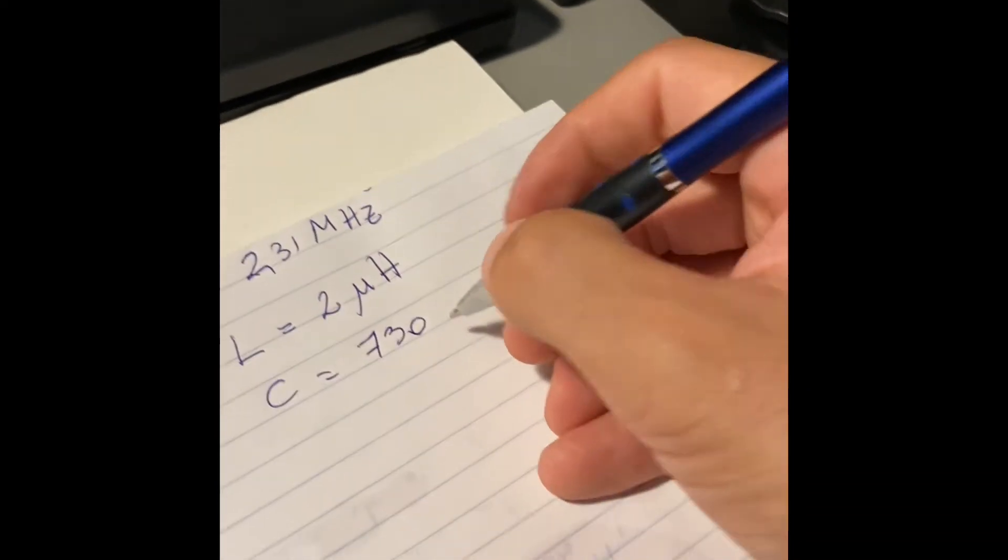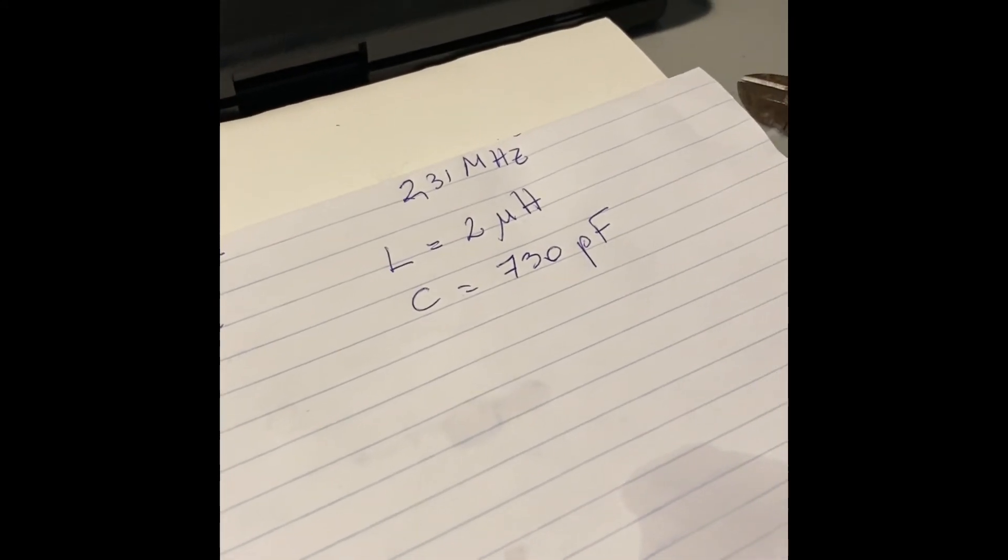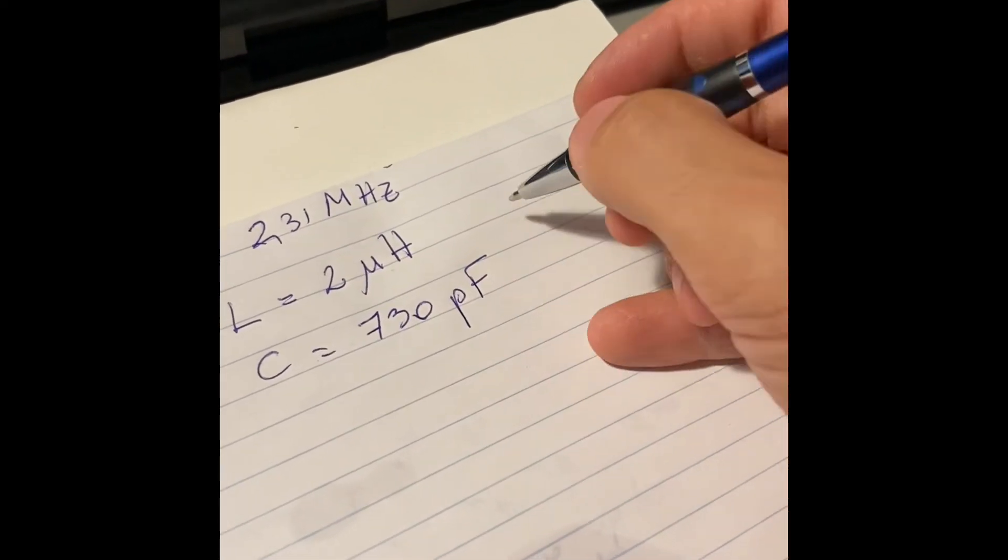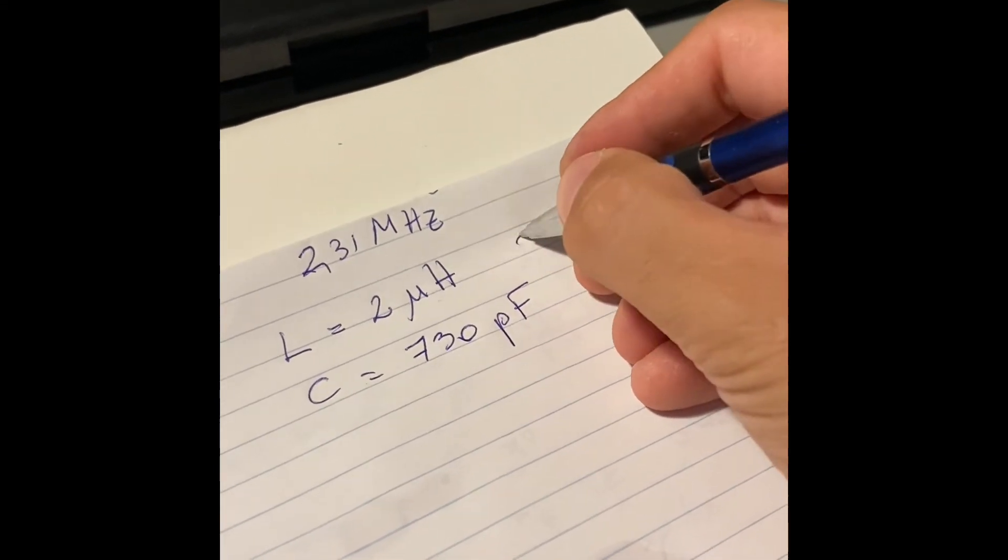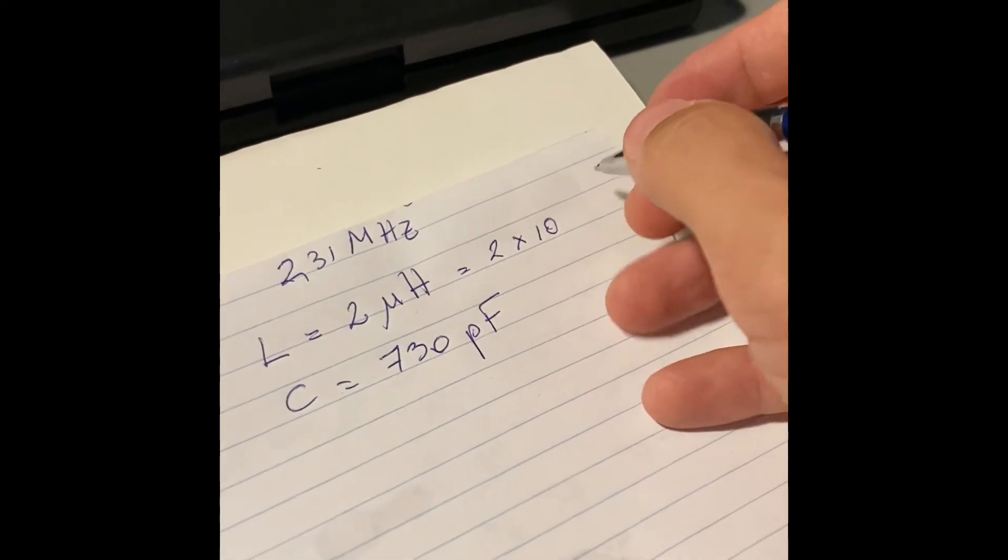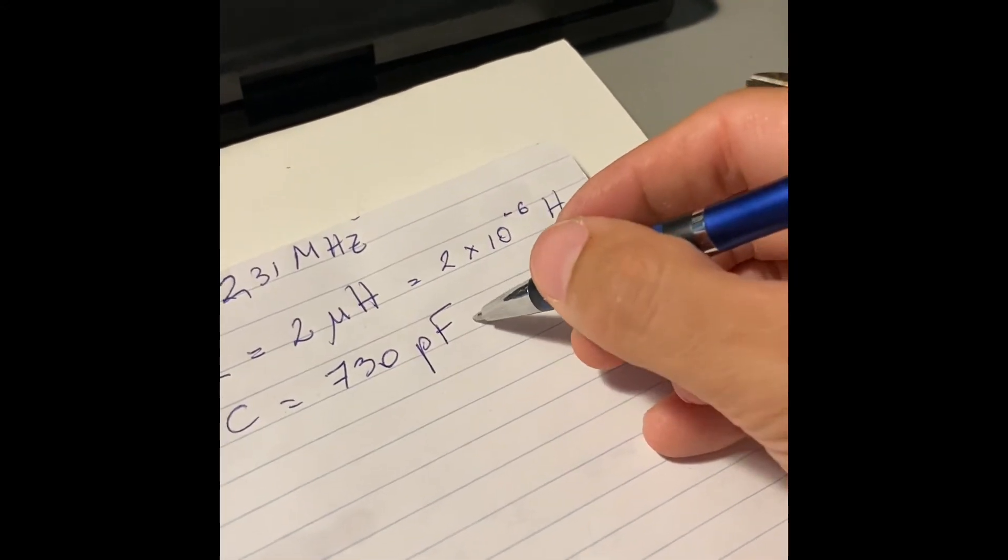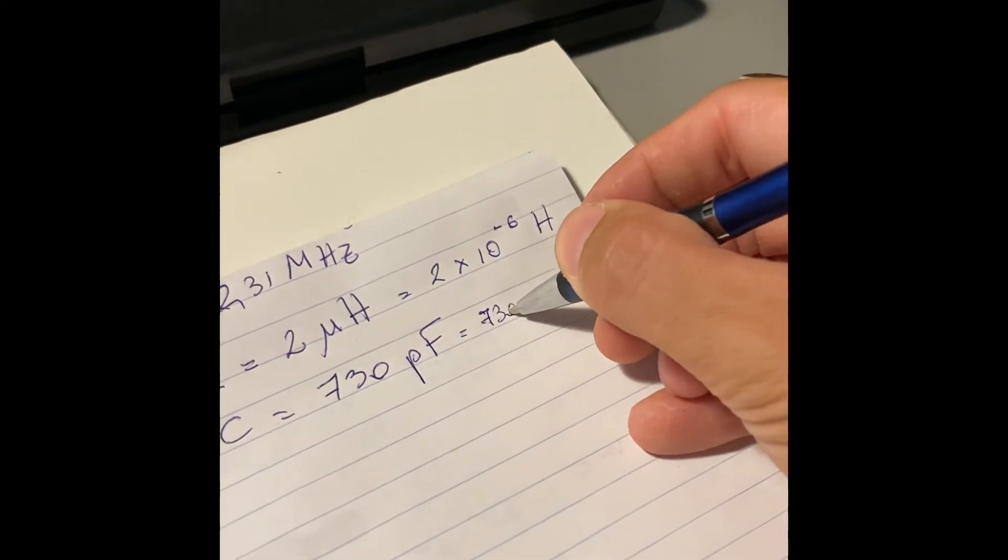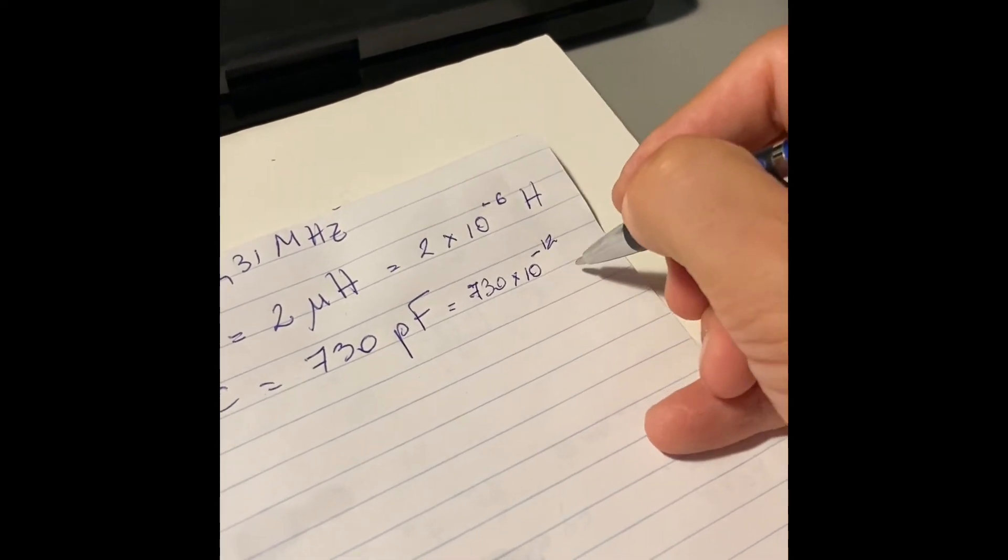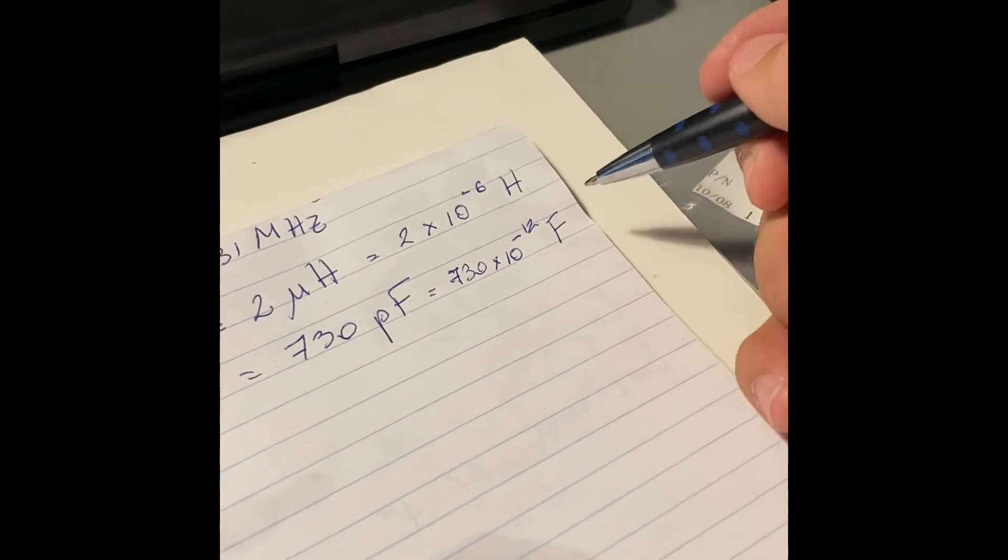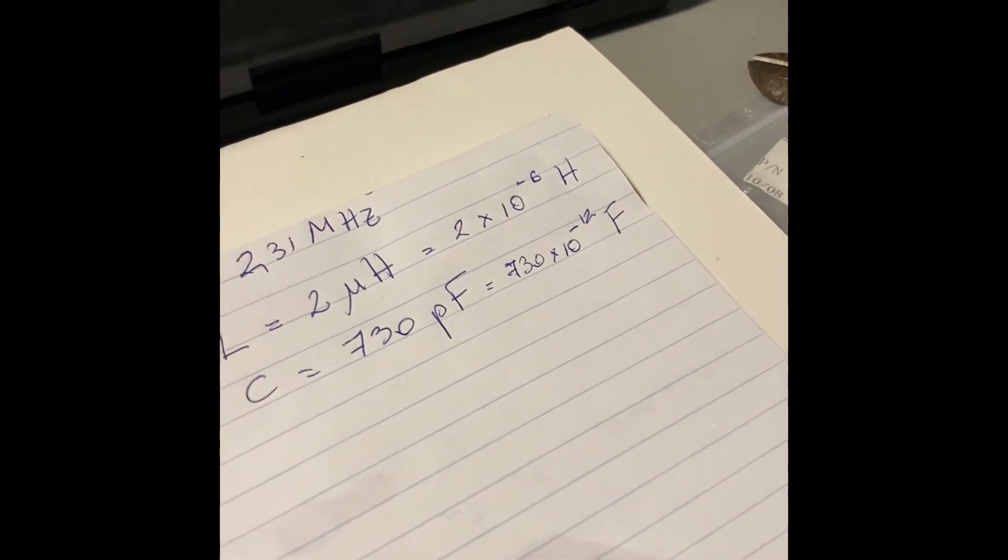So we'll take note of that - 730. Now we do the ratio. Obviously we need to take account of the different units or subunits, because this is basically 2 times 10 to the minus 6 henrys, and this is 730 times 10 to the minus 12 farads. This is micro and this is pico.